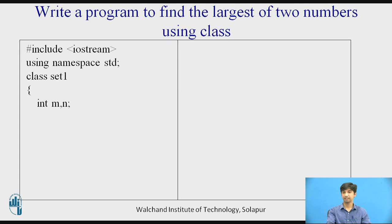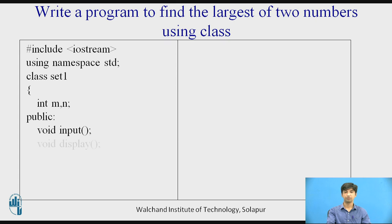I will declare two variables m and n as integers since I want two numbers. Then public is the access specifier — m and n are private member variables, as the default access specifier is private. So public is the access specifier for the functions. I will declare: void input, which is the member function declaration; void display, the display function; and finally int largest, which will find the largest of two numbers and has a return type of integer. Then I will be ending the class.